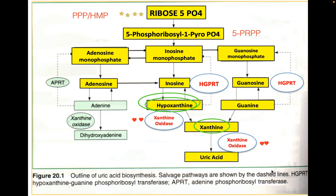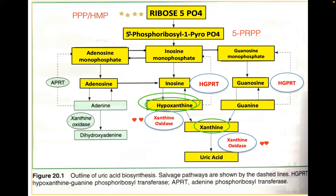The rate-limiting enzyme in purine metabolism in humans is xanthine oxidase. There is another important enzyme: HGPRT (hypoxanthine-guanine phosphoribosyltransferase). So two key enzymes in purine metabolism: number one is xanthine oxidase, and number two is HGPRT.